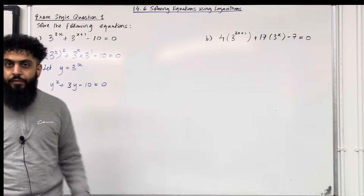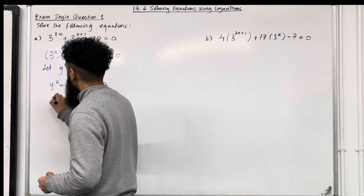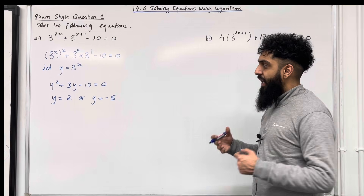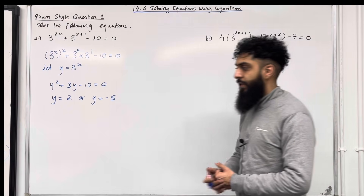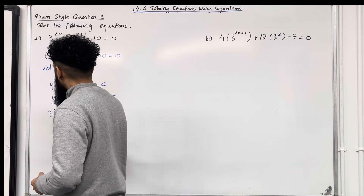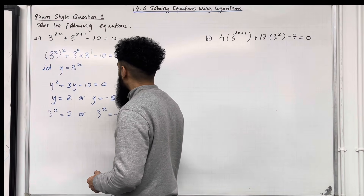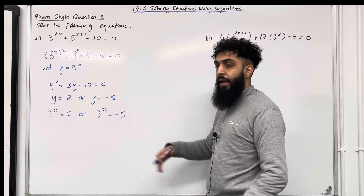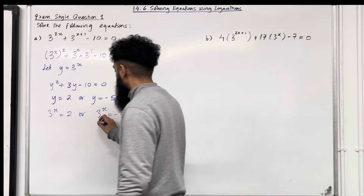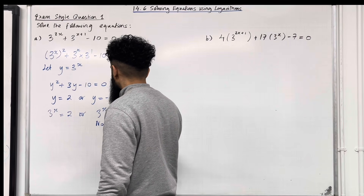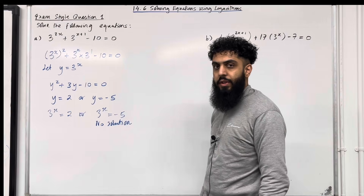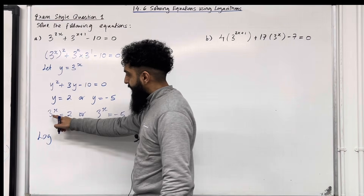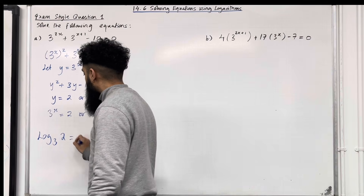So I've got y squared plus 3y minus 10 equal 0. Now I can solve for y. The solutions are y equal 2 or y equal minus 5. But I'm solving the equation for x, so now I need to replace the y's with 3 to the power x. So I've got 3 to the power x equal 2 or 3 to the power x equal minus 5. Now, any power of 3 will always be positive. Over here we've got a negative number, hence this particular equation has no solution. So all that remains is to solve 3 to the power x equal 2. I can rewrite this power equation in logarithmic form: log base 3 of 2 equals x.